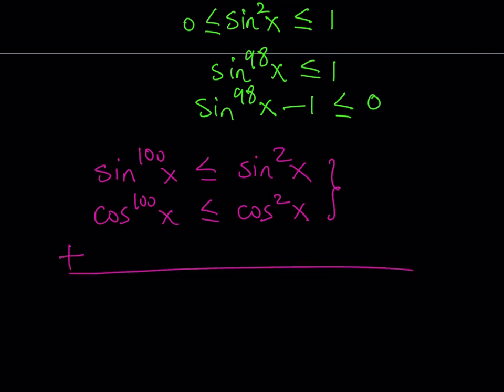When you add these two inequalities, something interesting happens, because we get sin^100(x) + cos^100(x) is less than or equal to sin²(x) + cos²(x), which is equal to 1. Great.